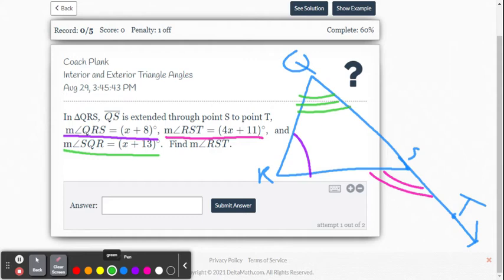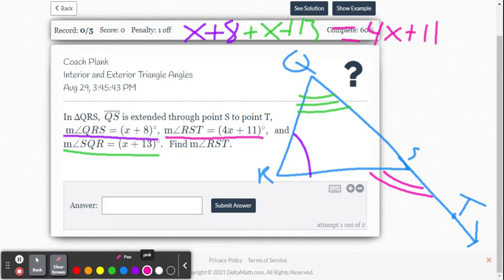So we're going to write the algebraic equation now to solve this by adding up the remote interior angles and send those equal to the exterior angle. So we're going to say x plus 8, I'm going to color code this, plus the x plus the 13. Those are the two remote interior angles. And they are going to equal the exterior angle, which is the 4x plus 11. So you can kind of see it color coded there at the diagram. So now we have our algebraic equation written. All we got to do is solve it now.